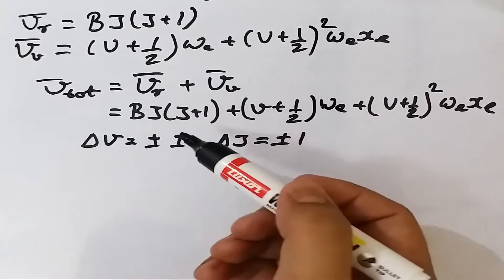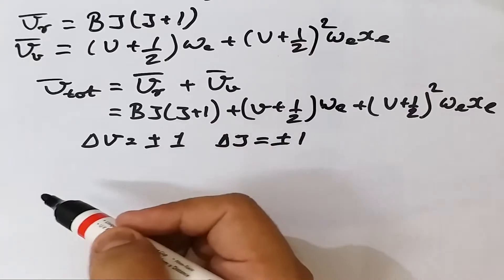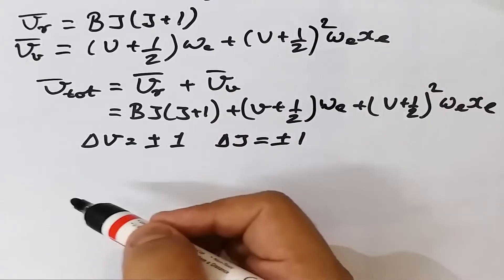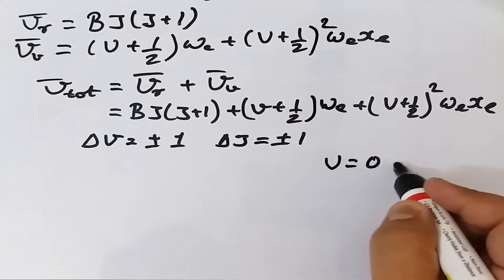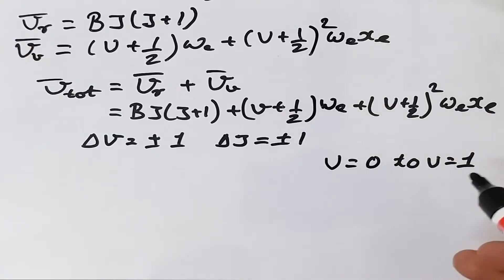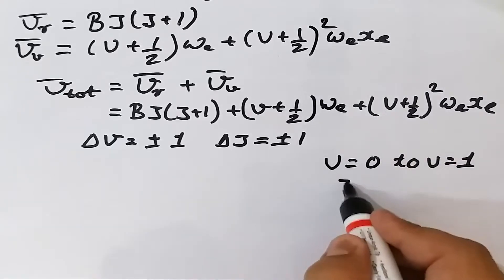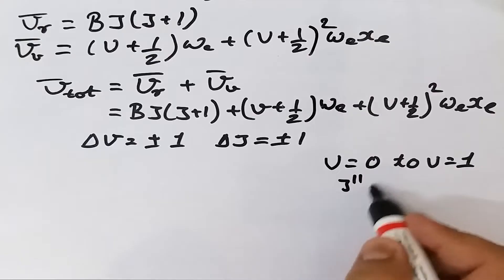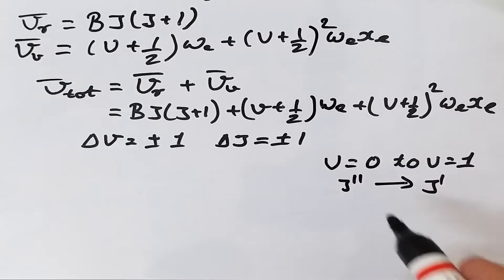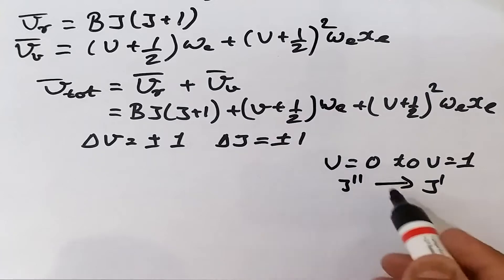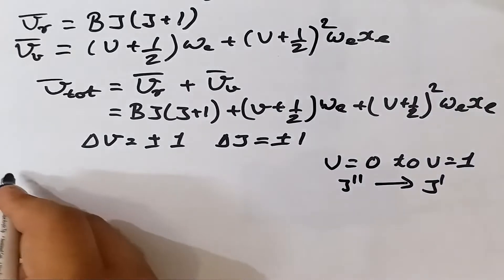In vibrational spectra, the ground state energy levels are most populated, and the fundamental frequency corresponds to the transition from v = 0 to v = 1. We consider this first transition; higher transitions can be neglected. Let J'' represent the ground rotational state and J' represent the excited rotational state, so molecules transit from J'' to J'.